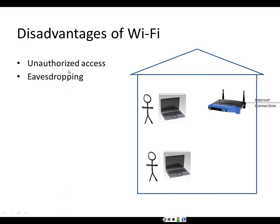Two disadvantages of Wi-Fi related to security are unauthorized access and eavesdropping. For example, if you live in the top floor of an apartment building with a wireless router, the people downstairs could tap in to your wireless router to get unauthorized access, which will slow you down. Even worse, somebody downstairs with a protocol analyzer on their wireless computer could intercept packets you are sending and potentially steal passwords or credit card numbers.